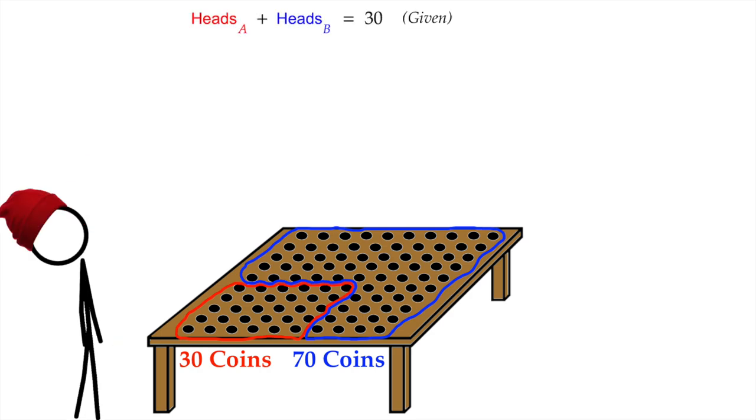But we are also told there's 30 heads all together in total. So, the number of heads in A plus the number of heads in B equals 30. Yeah, but 30 is also the number of coins in A. The number of heads in A plus the number of tails in A equals 30 as well.